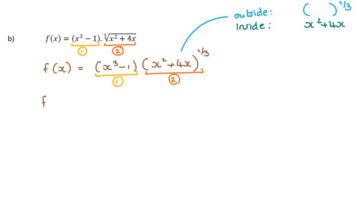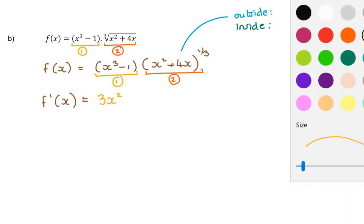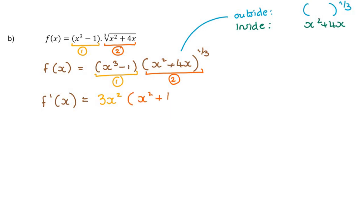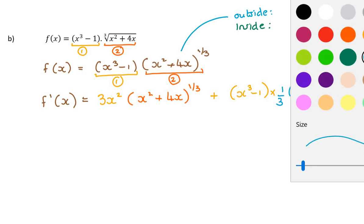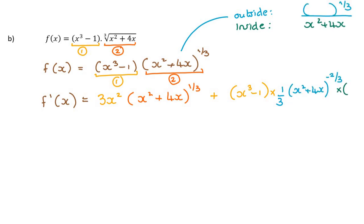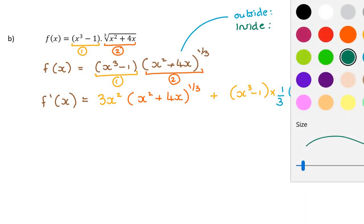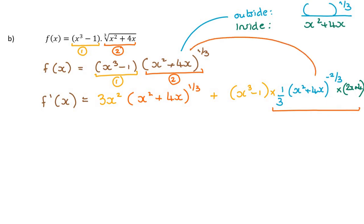I noticed I wrote f-dash there when I was just rewriting f, so now I can call this f-dashed. The product rule says: differentiate the first function, giving three x squared, multiplied by the second function left alone — x squared plus four x to the power of a third — plus leave the first function x cubed minus one and multiply by the derivative of the second function, which is a chain rule. Differentiate the outside function: one third, leave the inside function alone, subtract one giving minus two thirds, then multiply by the derivative of the inside function: two x plus four.